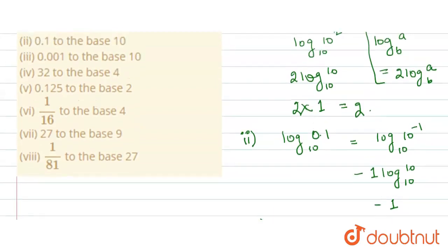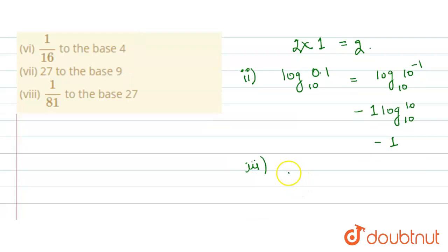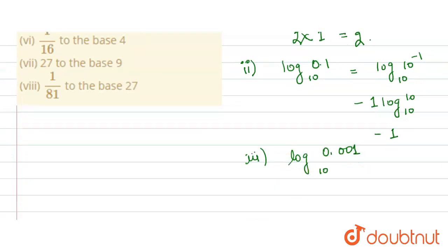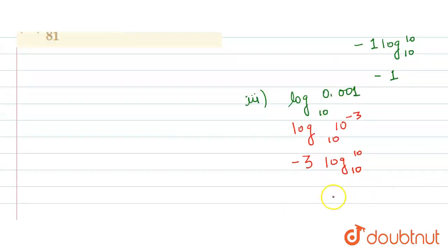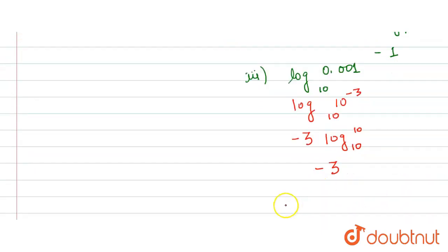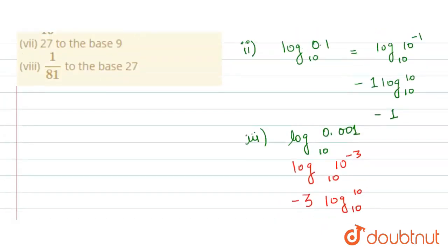Moving on to the third part, we need to calculate the value of log 0.001 to the base 10. I can write 0.001 as 10 raised to the power minus 3. Applying the same property, minus 3 comes outside the log, leaving log 10 to the base 10, which equals 1. So the answer is minus 3.